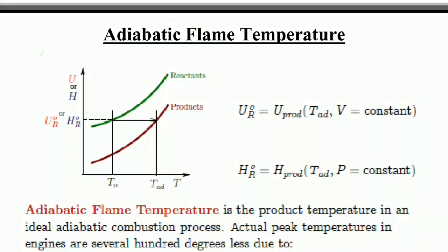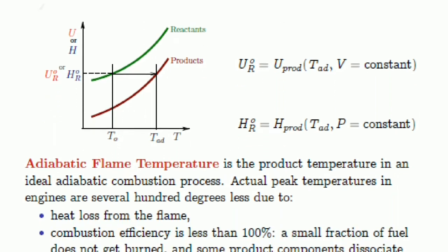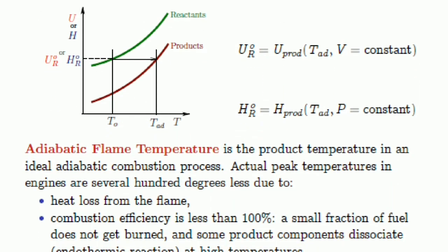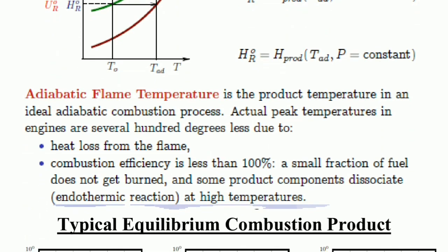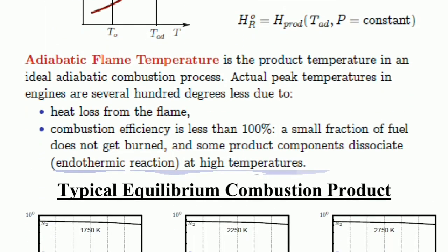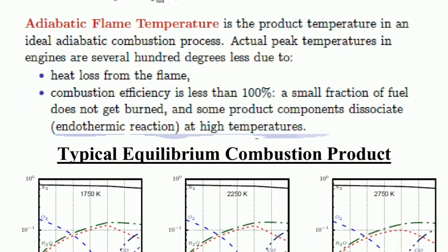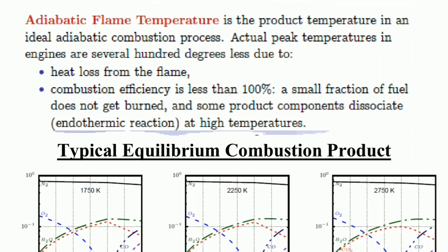Adiabatic flame temperature: the green line is for reactants and the red line is for products. Adiabatic flame temperature is the product temperature in an ideal adiabatic combustion process. Actual peak temperatures in engines are several hundred degrees less due to heat loss from the flame, combustion efficiency less than 100%, a small fraction of fuel not getting burnt, and some product components dissociating in endothermic reactions at high temperatures.